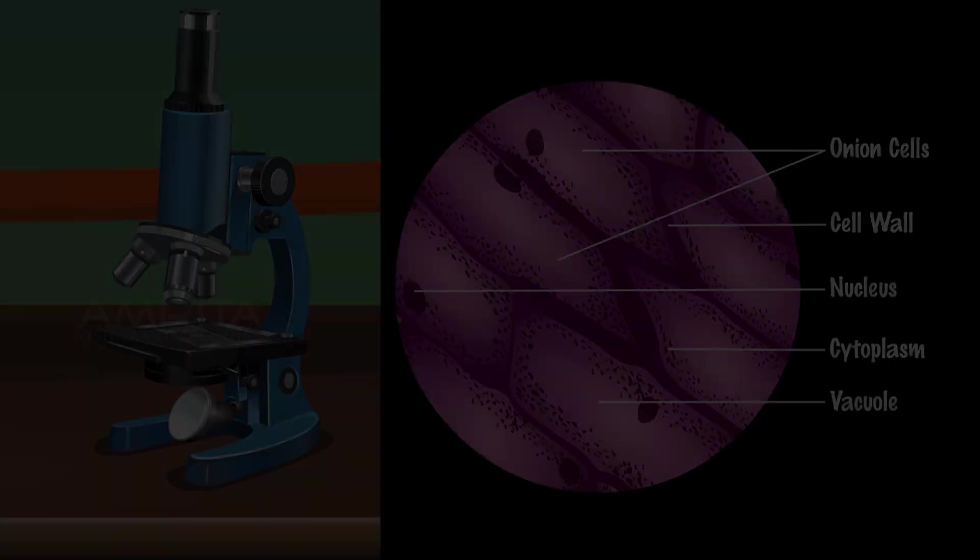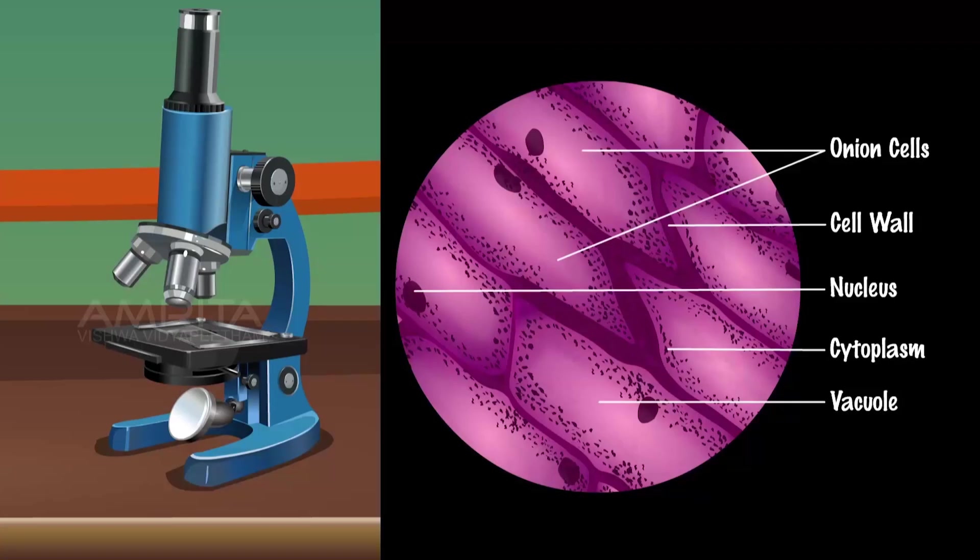Conclusion: Cell walls and large vacuoles are clearly observed in all cells, and the cells in the observations are plant cells.